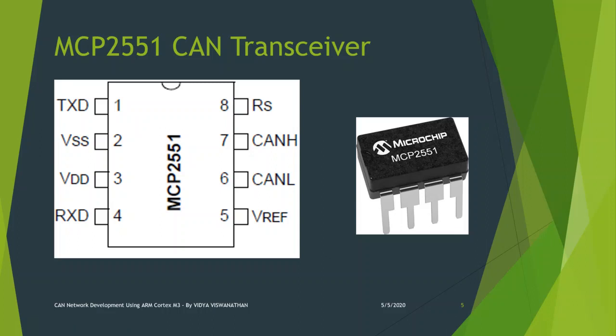The MCP2551 is a high-speed, fault-tolerant CAN transceiver that serves as the interface between a CAN protocol controller and the physical bus. It provides differential transmit and receive capability and is suitable for 12V and 24V systems. It operates at speeds of up to 1 Mbps. The IC package has 8 pins, which include CAN high and CAN low pins as shown in the figure.